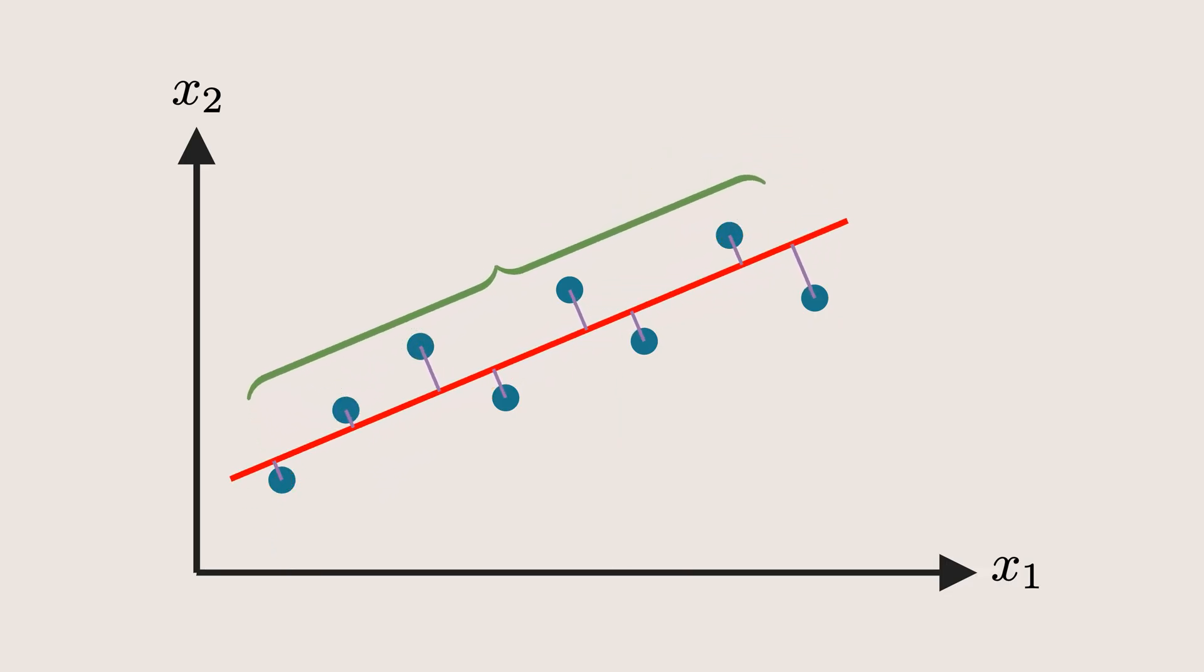In this case, it looks like this axis is perfect, as it captures the highest variation in the data. We call this axis PC1 or principal component 1.